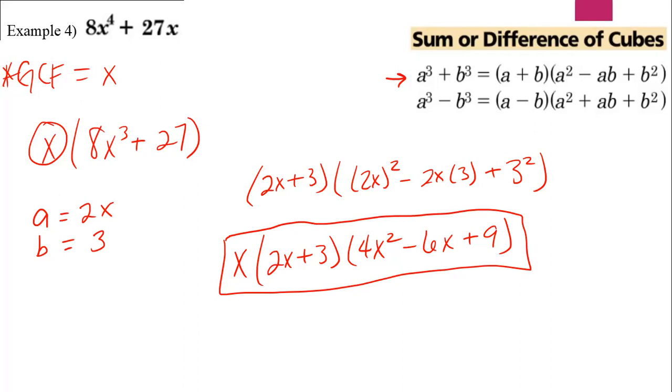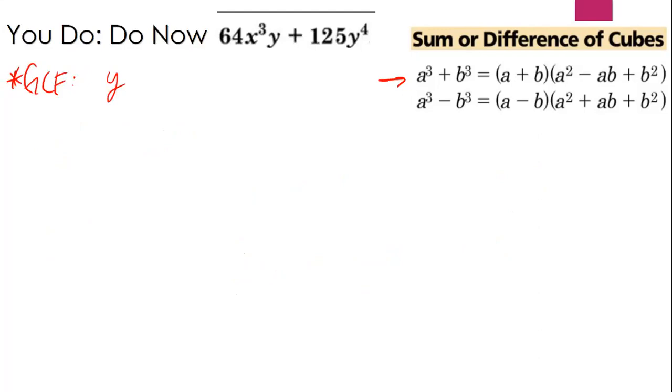All right, so going back to your do now, your you do that I will check and make sure you did. I gave you the hint there is a GCF. Once I take out that GCF, all I'm doing is figuring out what is the cube root of the first term, what is the cube root of the second term, and I'm plugging in for a and b, correct?